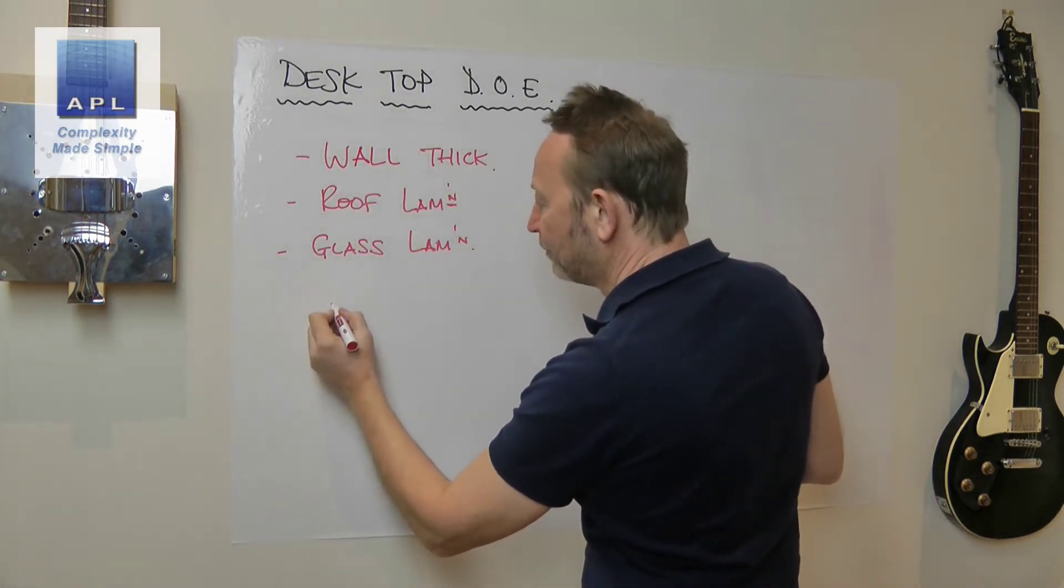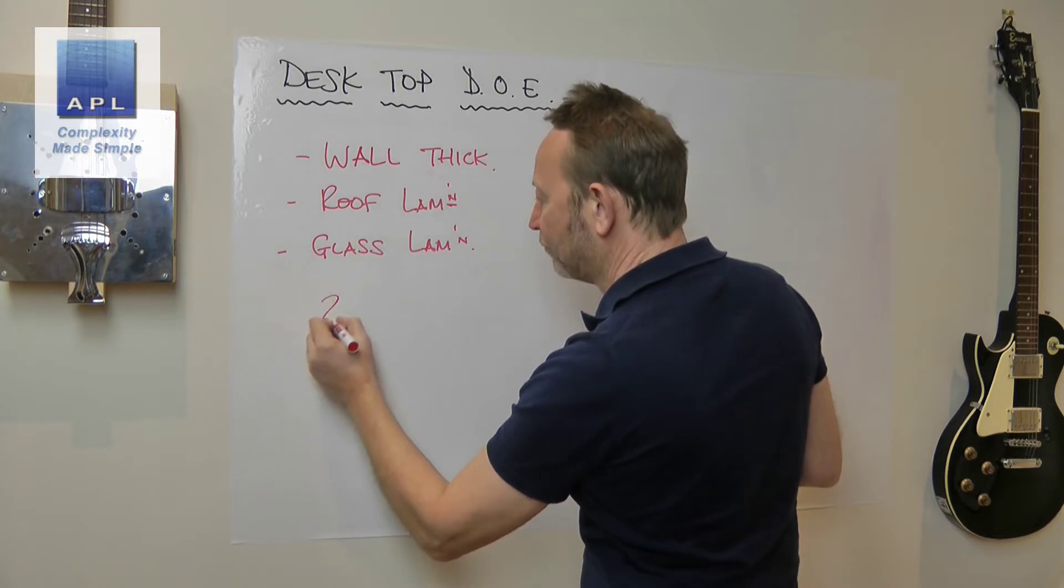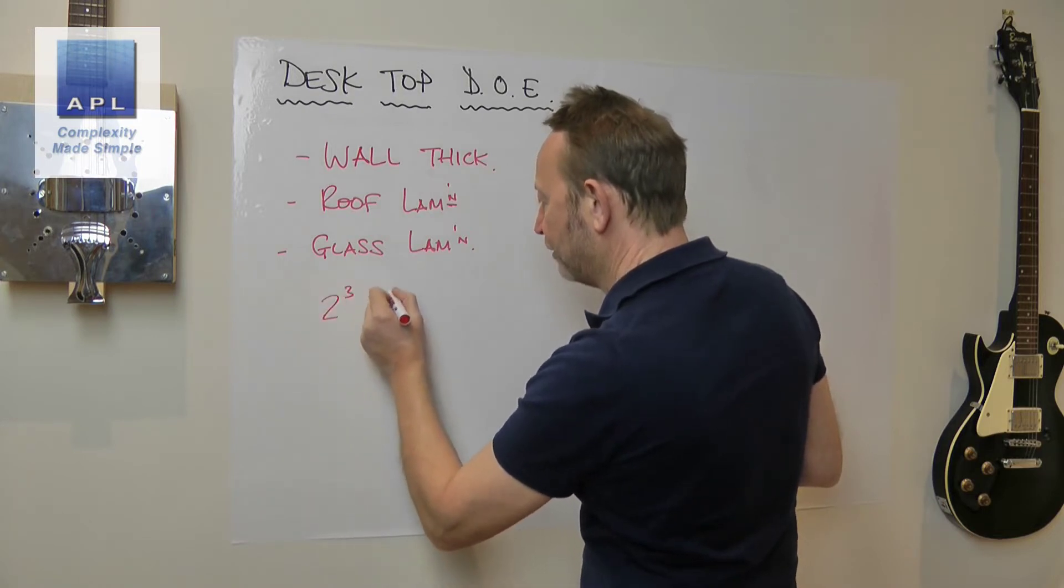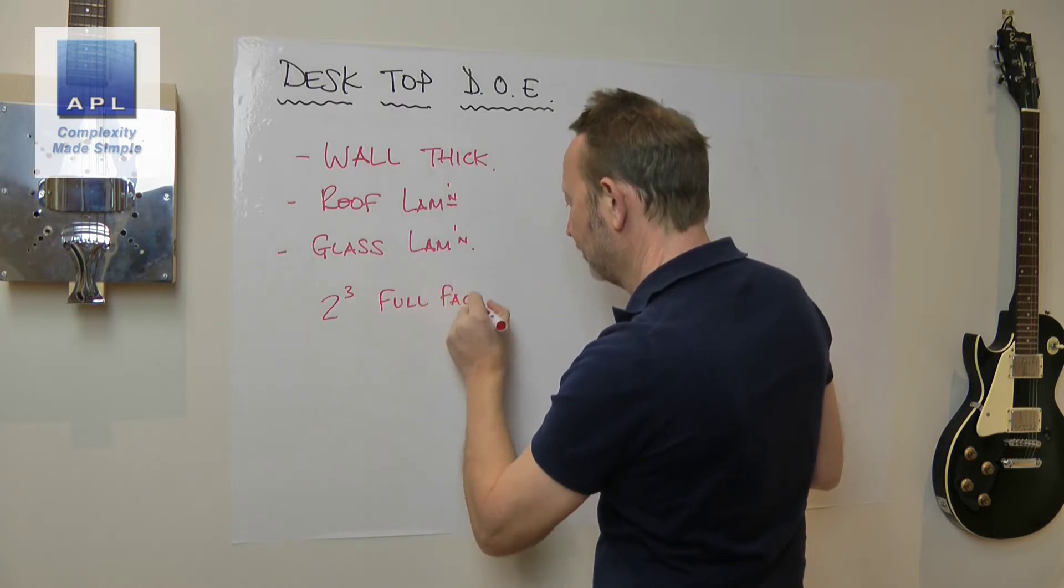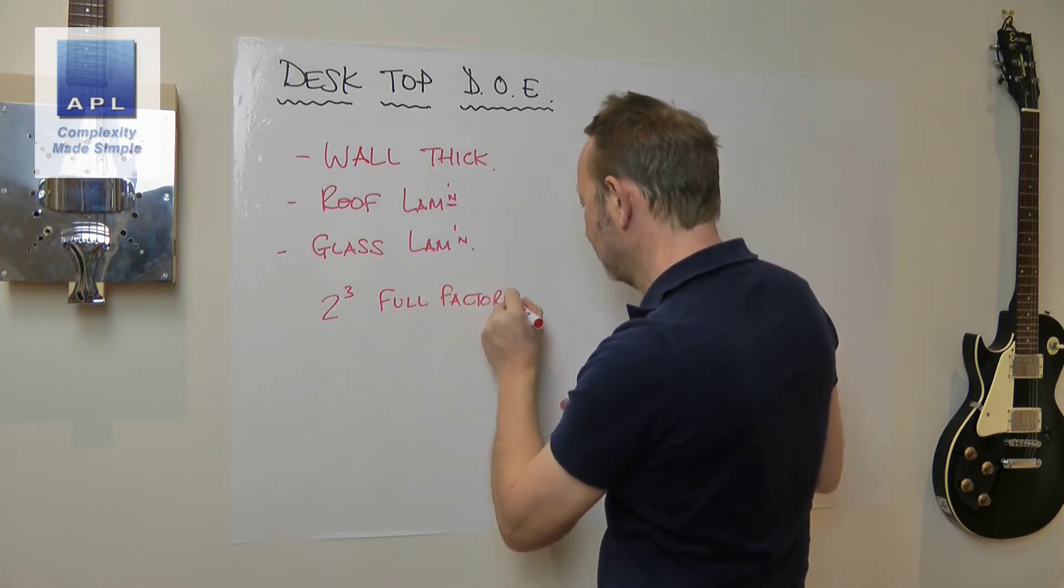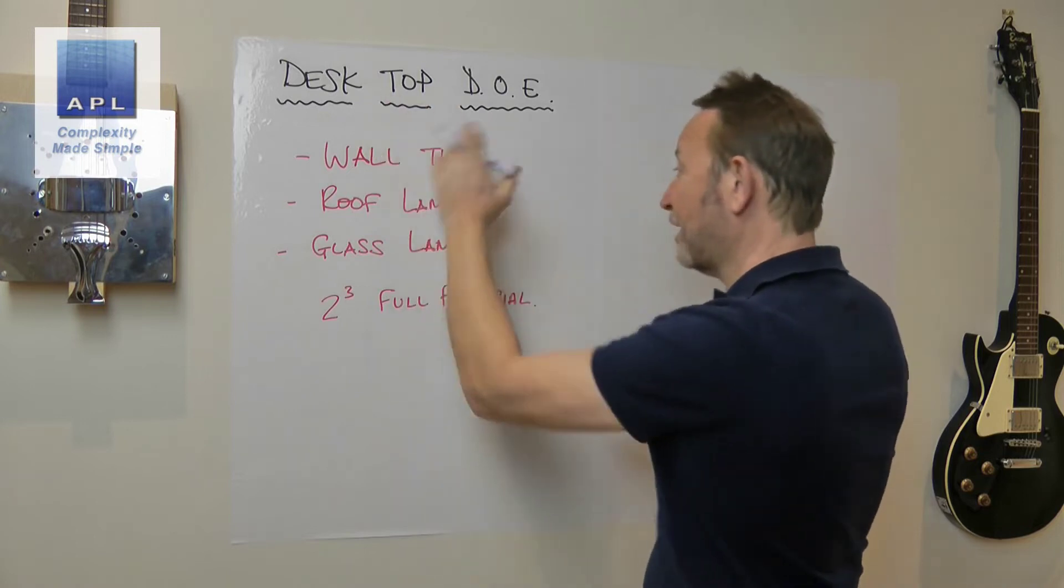So they're the three inputs. What are we doing? Well we're going to do a 2 to the 3 linear full factorial with this. That's what we're going to do, but it's a calculation, it's a desktop DOE.